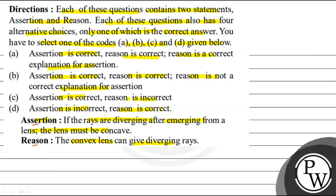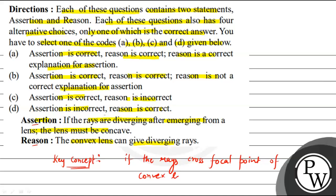We have been given that assertion and reason, and whether the reason is a correct explanation of the assertion or not. So, first of all, the key concept to talk about: if the rays cross the focal point of a convex lens, then they become diverging.